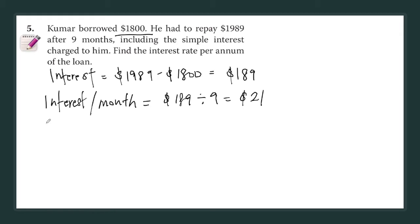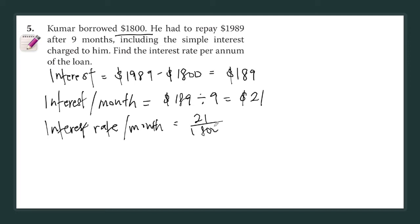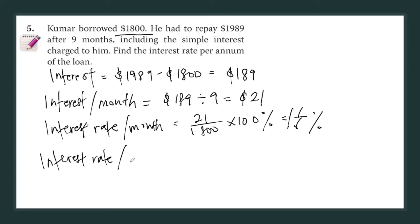So that means we can find the interest rate per month — and you just multiply by 12 to get the annual rate. Per month it will be 21 out of 1800 times 100%, which gives 1 and 1/6 percent. Per annum it will be 1 and 1/6 times 12, which equals 14 percent.